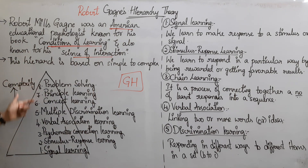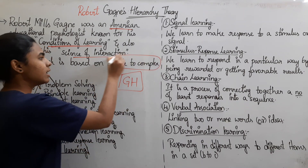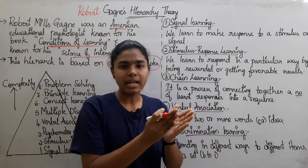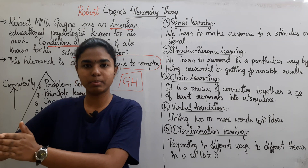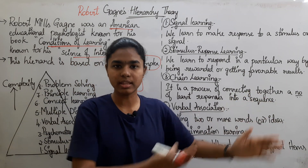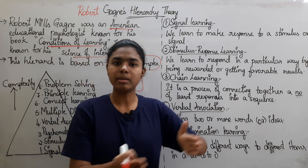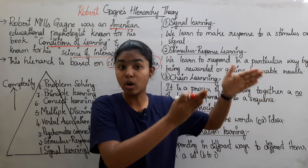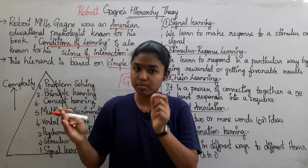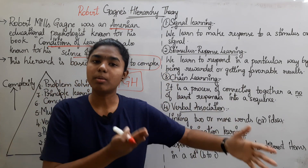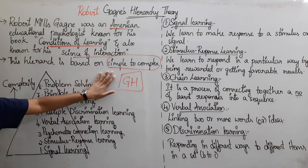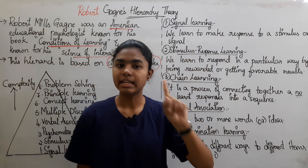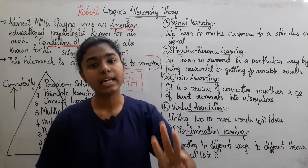This theory is discussed in terms of simple to complex. The hierarchy of learning increases from simple to complex things — not only in alphabets, but in each and everything. Learning is defined as a relatively permanent change in behavior due to experience.